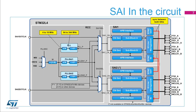The STM32L4XX embeds two SAIs. Each SAI can receive a kernel clock, SAINCKX, from one of the three internal PLLs or from the pads, SAINXTCLK. The kernel clock is used by the SAI in order to generate the timing of the serial audio interface when programmed in master mode.